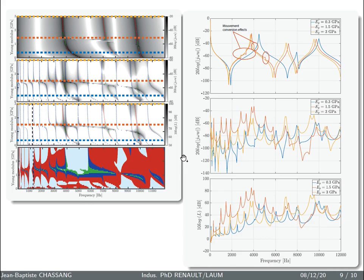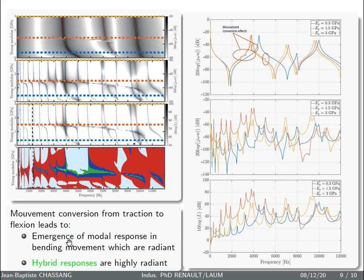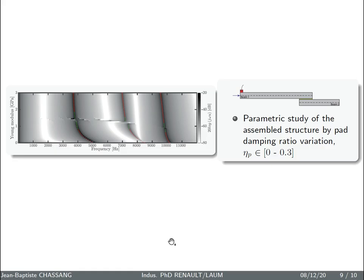If we extract the responses at a higher Young modulus value, we then find similar to those obtained at low Young modulus value in terms of level of the velocity field and the radiated power series, which become very low again. So we can say that movement conversion from traction to flexion leads to emergence of moderate response in bending movements, which are very radiant, as well as hybrid responses.